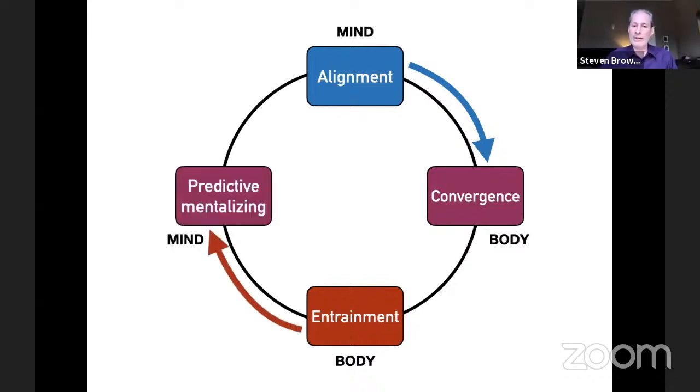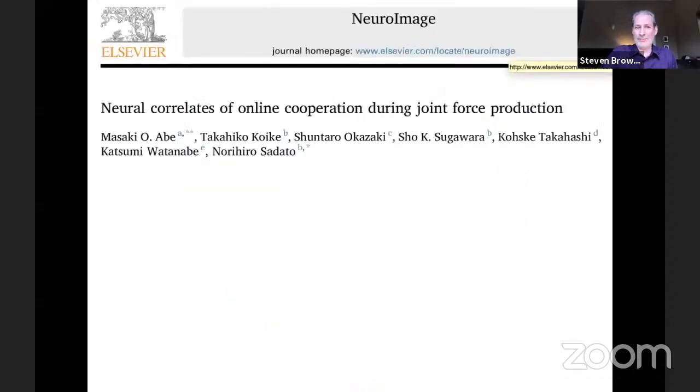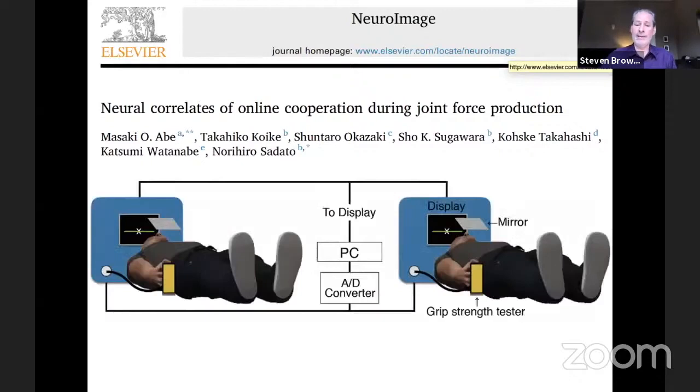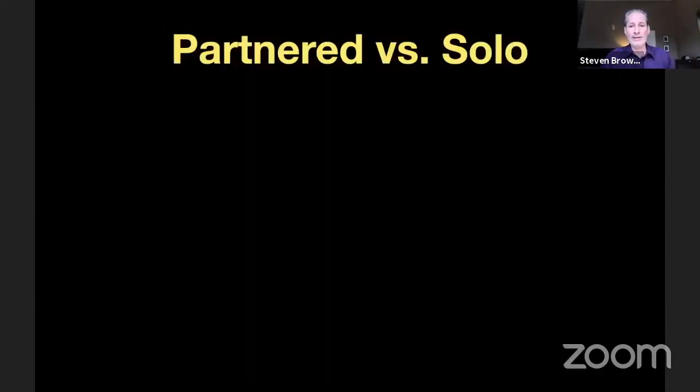I just want to look at the brain—just one slide about the brain. Here's a study, a recent study by Abhi and colleagues: Neurocorrelates of Online Cooperation During Joint Force Production. It's a hyperscanning fMRI study. Two people are placed in two separate scanners, and they're doing a force production task. They grip these force transducers, and they either do the task alone, or they do it where they have to align their force with their interaction partner. The question is, what parts of the brain are more active when people do this with a partner compared to when they do this alone?